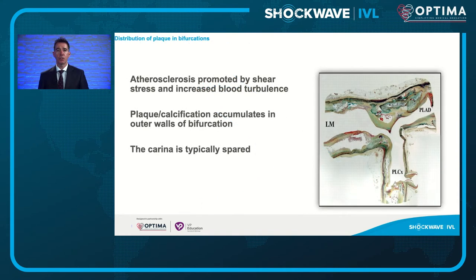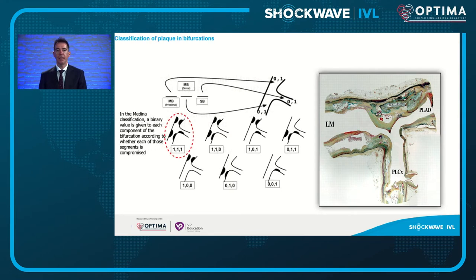The pathology is quite interesting in how disease forms at bifurcations. Turbulence and shear forces increase the likelihood of developing obstructive disease at bifurcations. There are many different classifications, but the Medina classification is one we use most commonly to describe the presence or absence of disease at each of the three limbs of the bifurcation: the proximal main branch, the distal main branch, and the side branch.